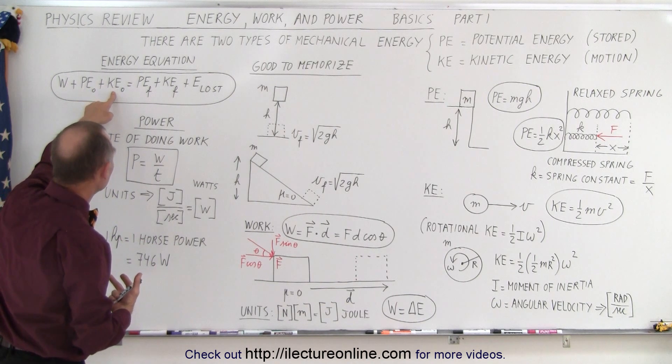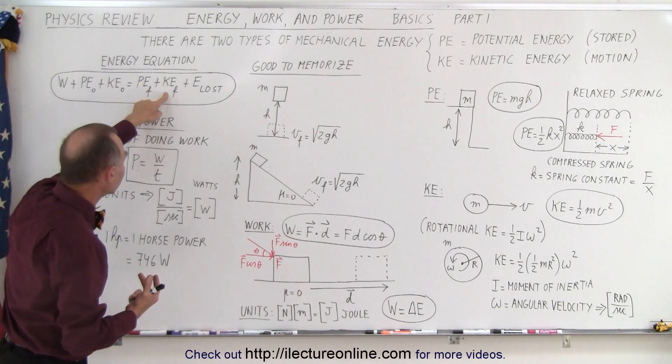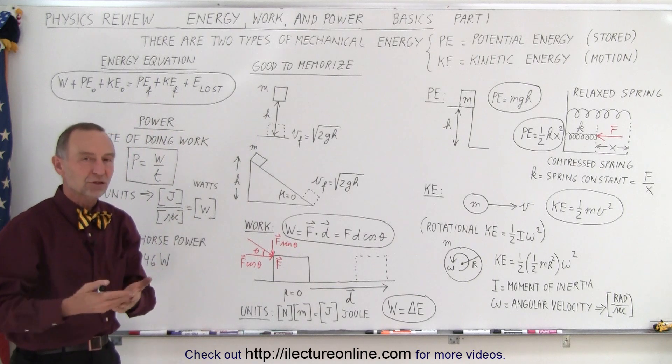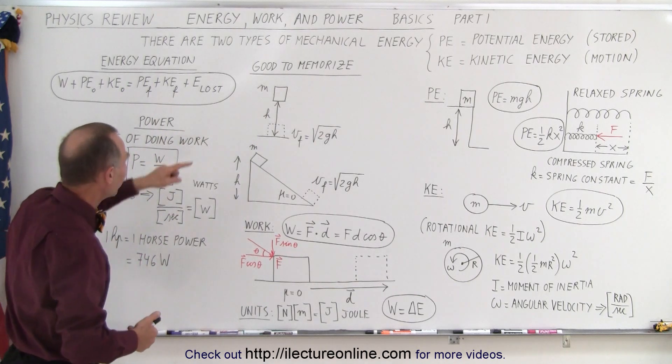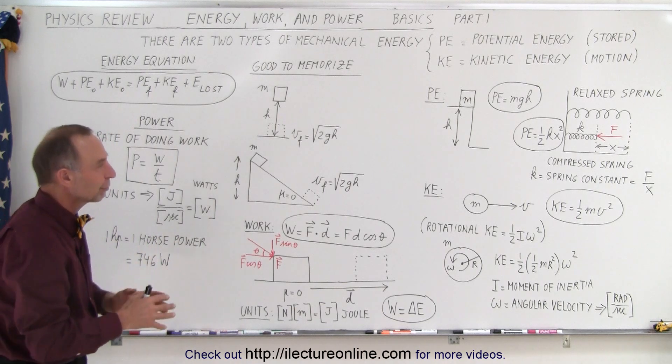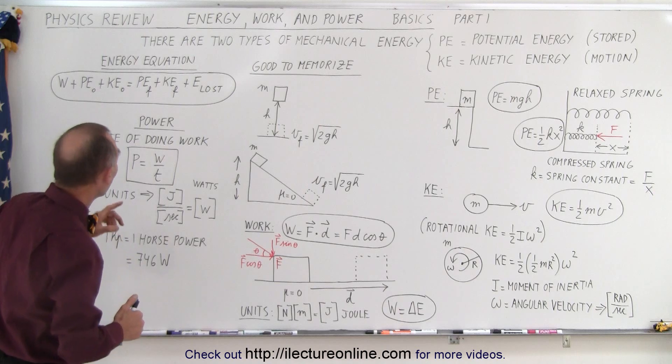plus the initial kinetic energy that it had when it started, must equal the final potential energy, the final kinetic energy, and any energy you might have lost due to friction or wind resistance and so forth. So typically the energy lost is due to some frictional forces, some retarding forces slowing the object down, trying to make the object stop. So,